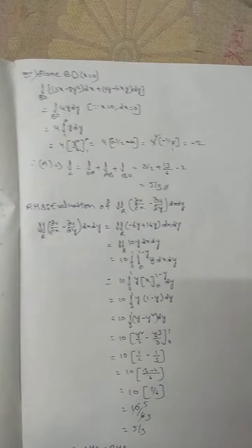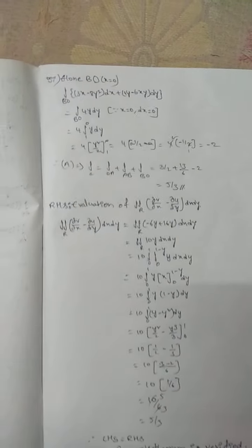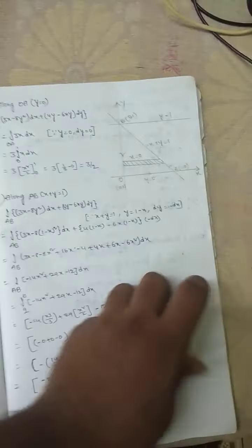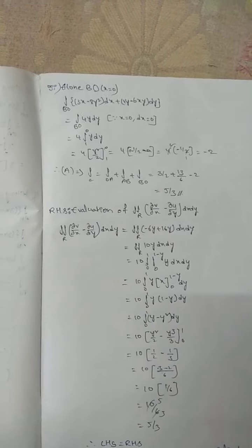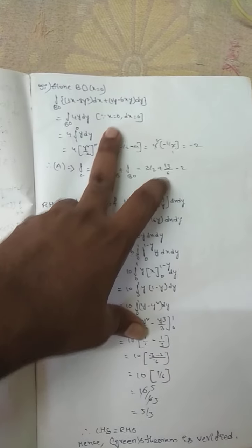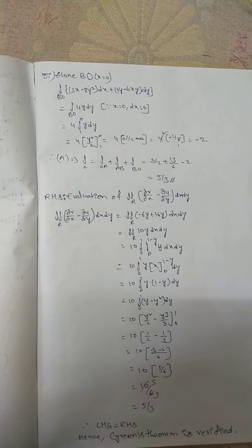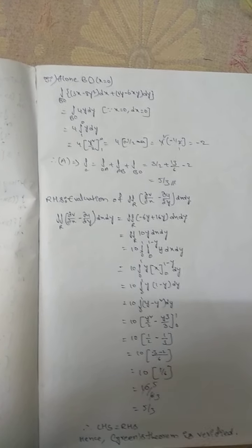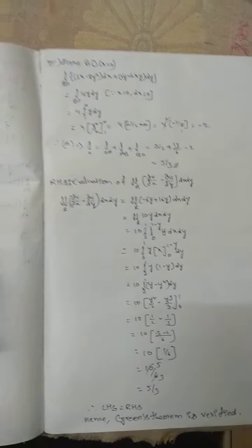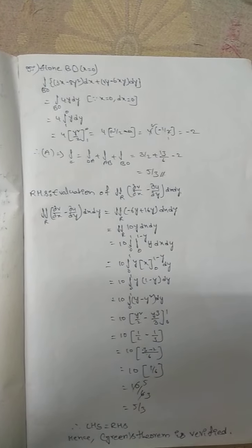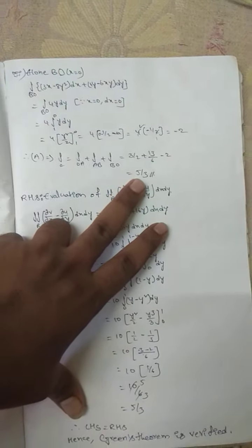Along BO: x = 0, dx = 0. Integral BO = ∫ (4y) dy with limits from 1 to 0. Solving: [4y²/2] = [2y²] from 1 to 0 = −2. Taking total: integral C = integral OA + integral AB + integral BO. Solving we get LHS = 5/3.